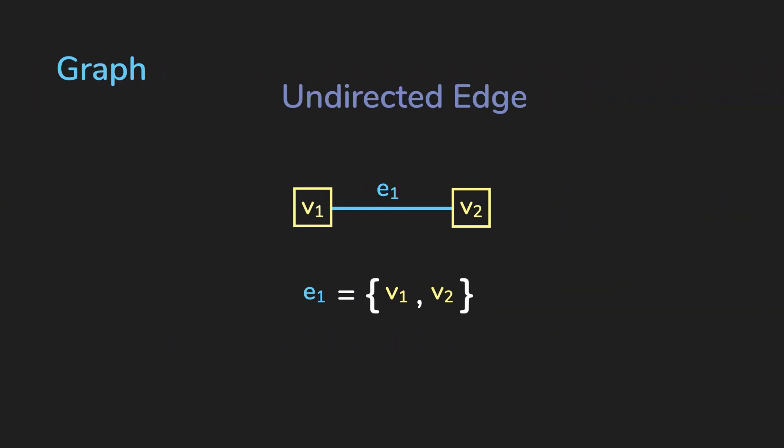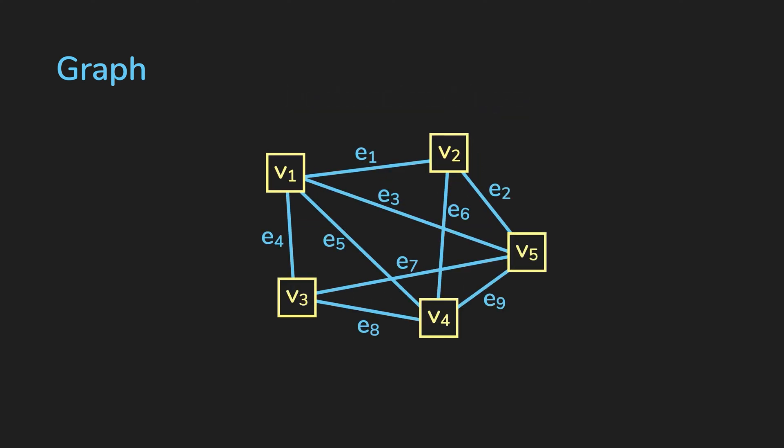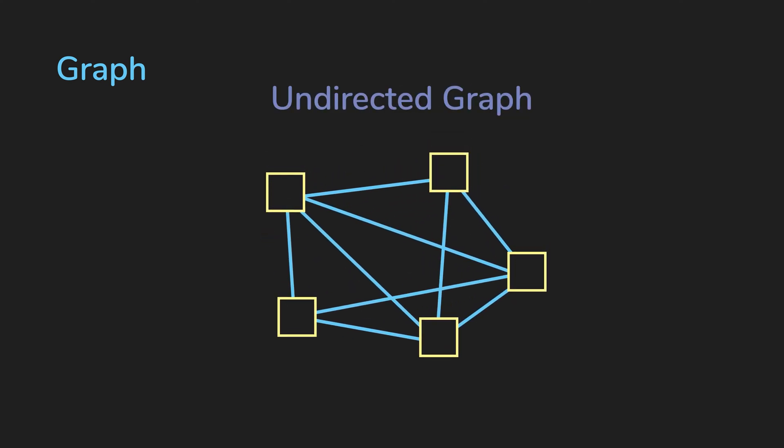For undirected edges, we usually use curly brackets, which usually represents a set where the order doesn't matter. So if we go back to our graph, based on the edges, we can say that this is an undirected graph, since we use undirected edges.